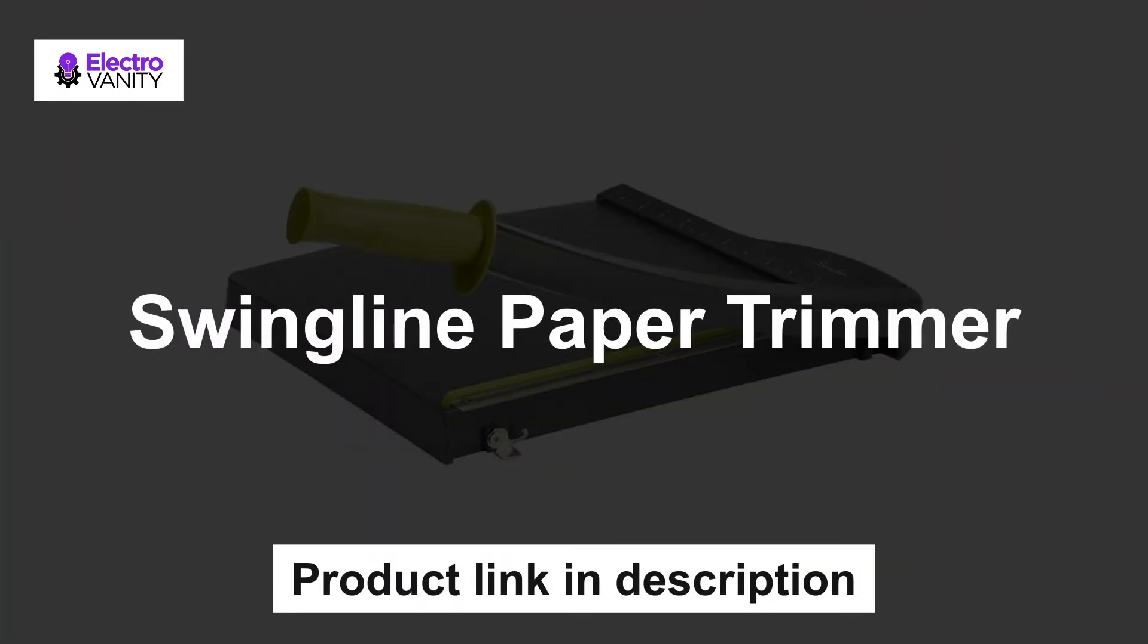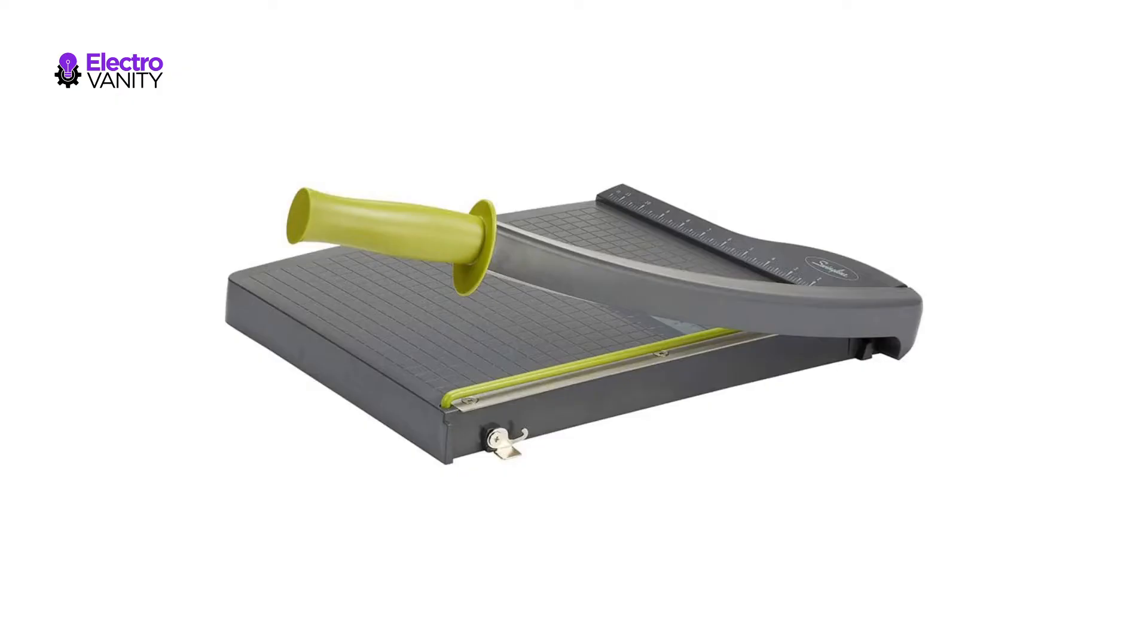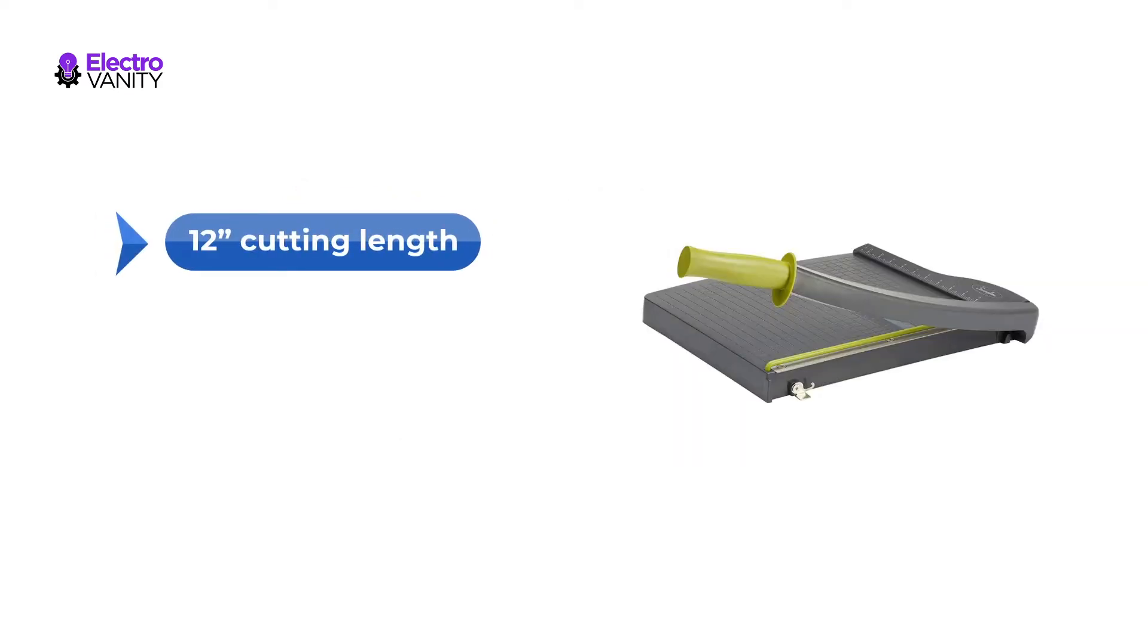The first one is swingline paper trimmer. This trimmer is simple and easy to use with a sharp guillotine blade and a hardy alignment grid. Built with a sturdy plastic base, it's also light enough for easy transport. With a 12-inch cutting length, it's a convenient choice for most common trimming tasks.